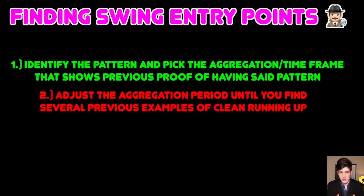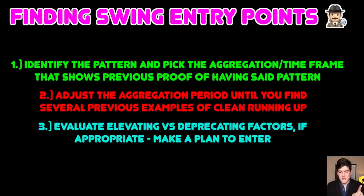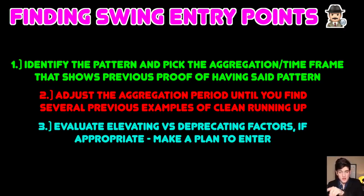Number two: adjust the aggregation period until you find several previous examples of clean running up. This isn't an exact science — you need to guesstimate based on previous patterns of running up. It's an art. Number three: evaluate your elevating and deprecating factors and make a plan to enter upon a clean confirmation. Don't trade messy price action that keeps giving you false confirmations above the SMA line. Make sure you're trading something that has a pattern of clean running up after confirmation and is also showing strong price strength. Stack your elevating factors — we don't just buy things because they're confirmed.